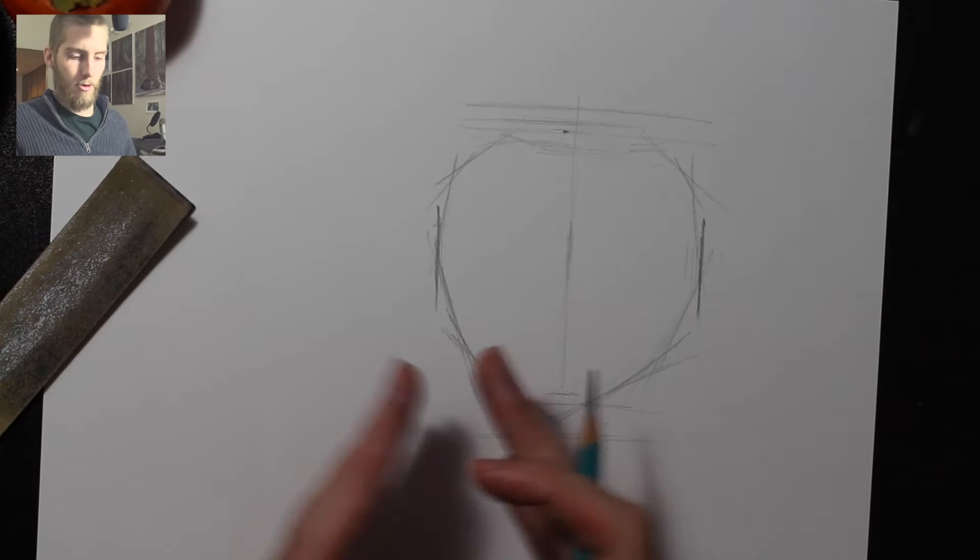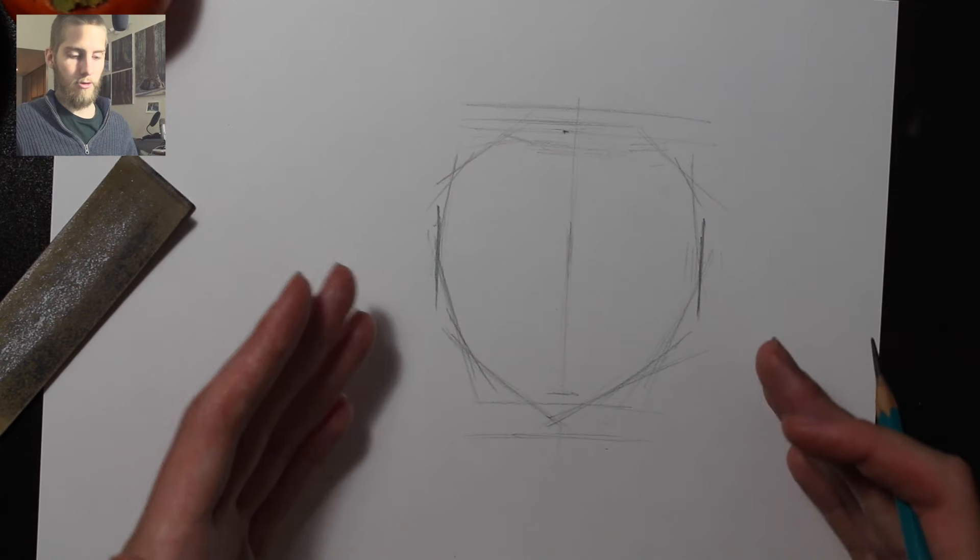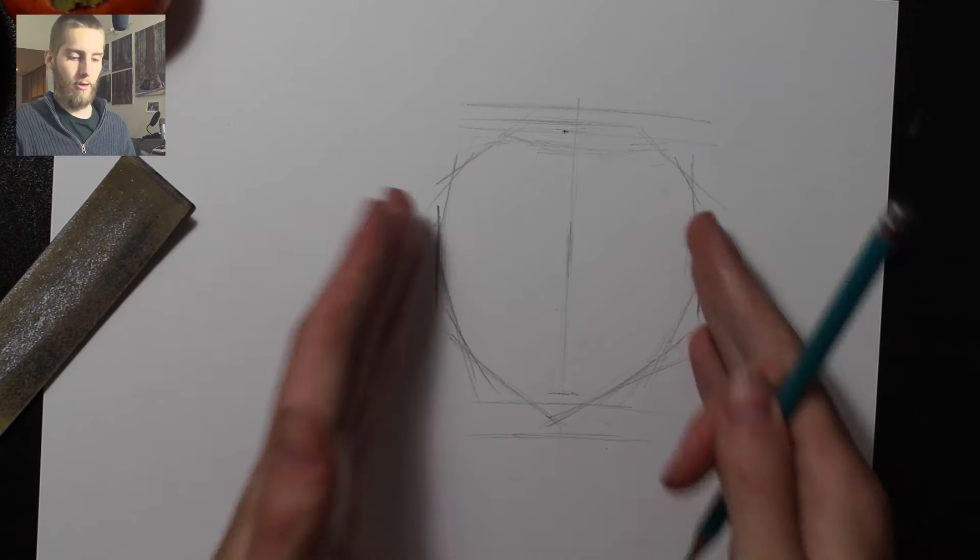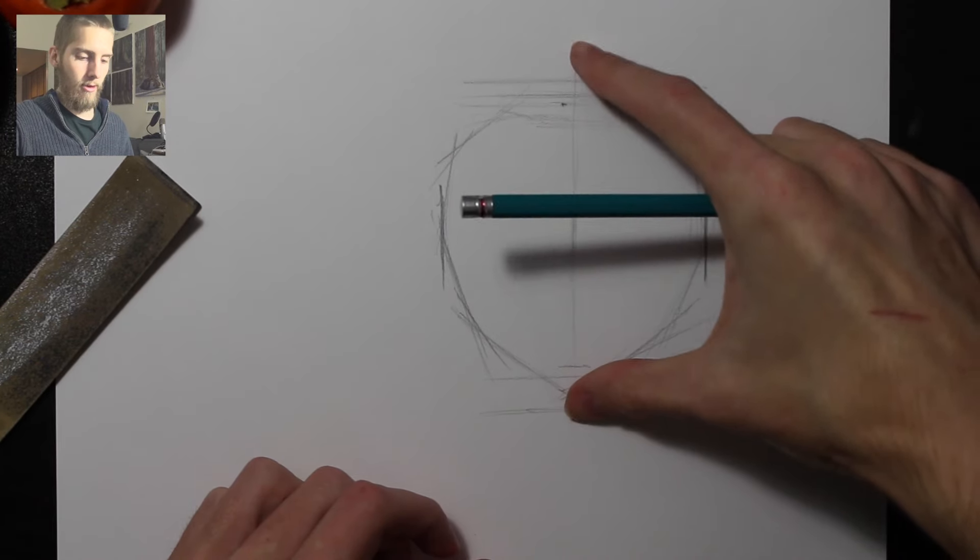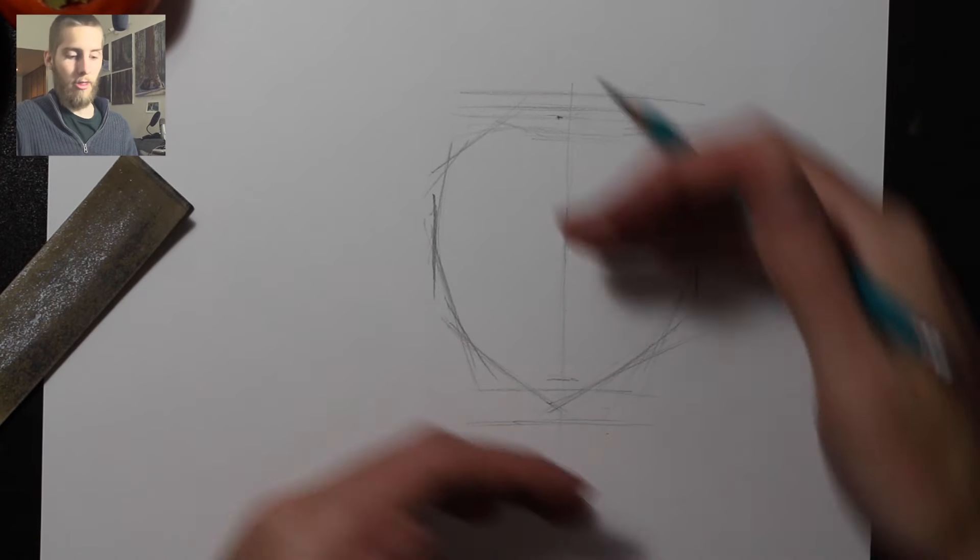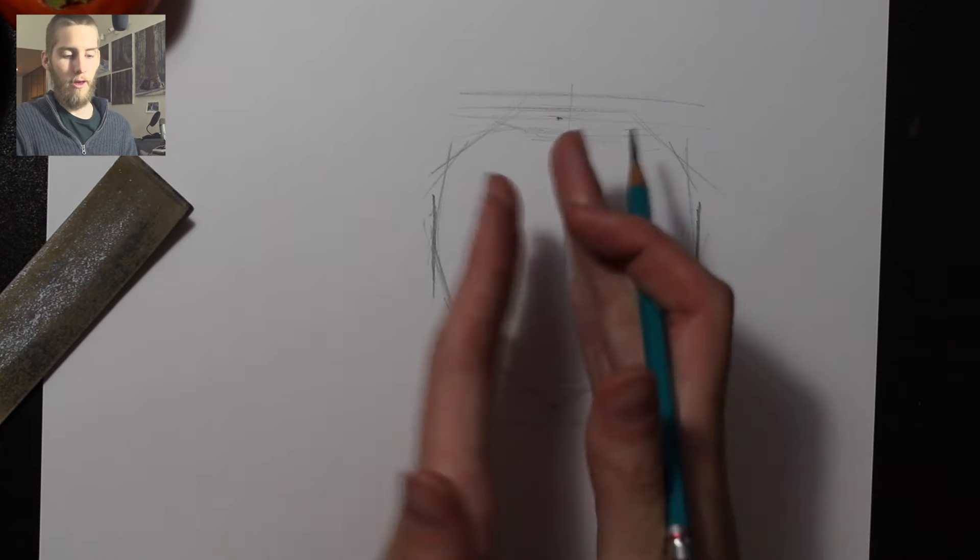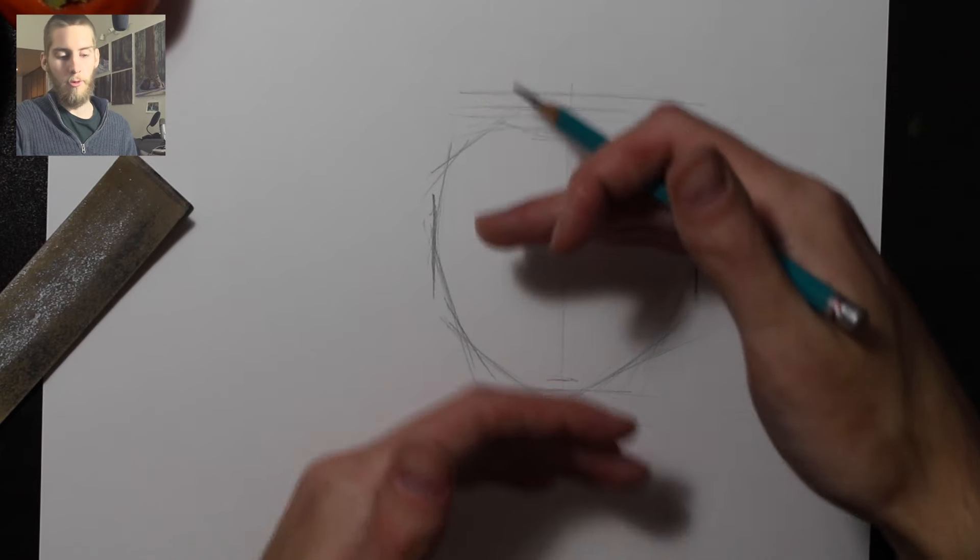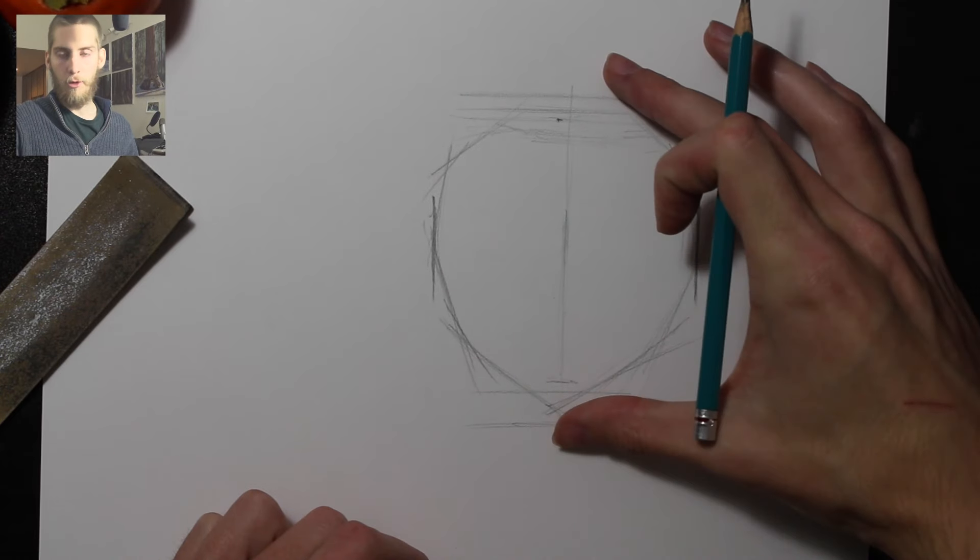So for now, I think that pretty much covers basic understanding of proportions, blocking it in width versus height, and then either determining the width on your paper of that object or the height, and then only moving the other two sides to determine the proportions. That's going to give you that width to height ratio.